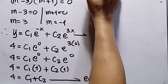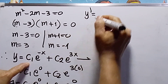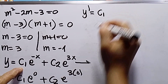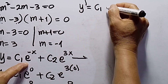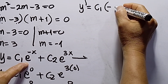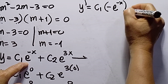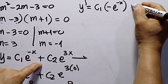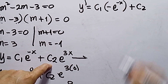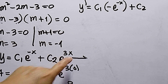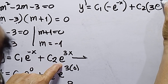Next, I differentiate the general solution. y prime equals the derivative of c1·e^(negative x), which is negative c1·e^(negative x), plus the derivative of c2·e^(3x), which is 3c2·e^(3x).